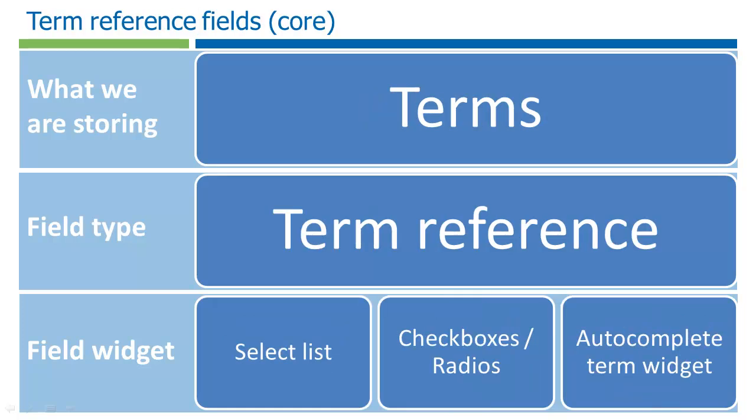Term references allow us to associate terms with an entity. They can be structured as a predefined list, or it can be used free form using a text field to enter multiple comma-separated values. This is often called free tagging. In many ways, this field is very similar to integer lists, and often they can be used interchangeably. But there are some differences though. Term references have more options as they're tied into Drupal's taxonomy system. We'll learn more about how taxonomy and term references work in a later video.